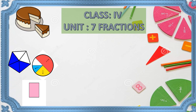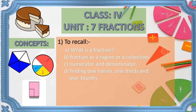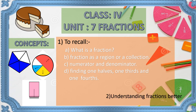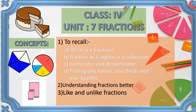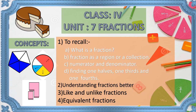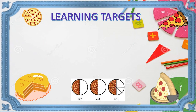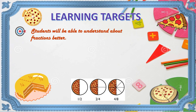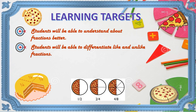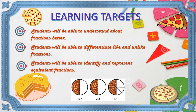This part one of unit 7, Fractions, contains four concepts. First, to recall: what is a fraction, fraction as a region or a collection, numerator and denominator of a fraction, finding one halves, one thirds and one fourths — which you have already learned in class 3. Next, we will learn like and unlike fractions, and equivalent fractions. After teaching these concepts, students will be able to understand fractions better, differentiate like and unlike fractions, and identify and represent equivalent fractions.